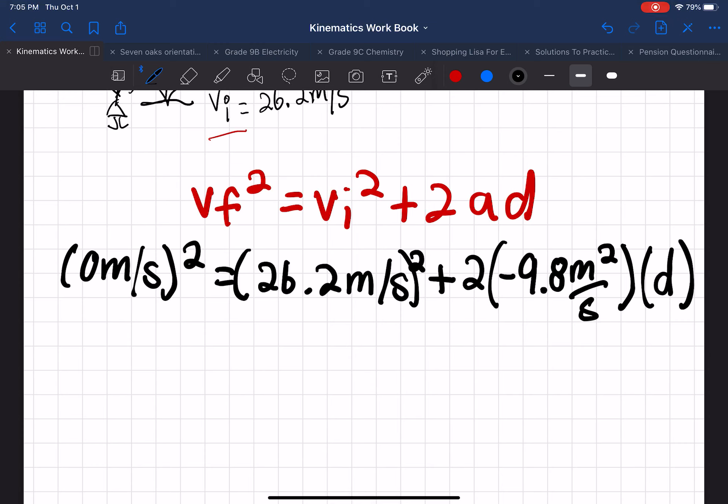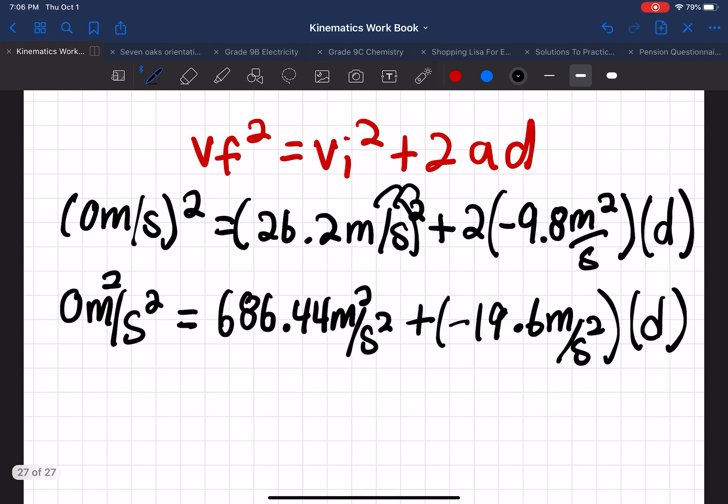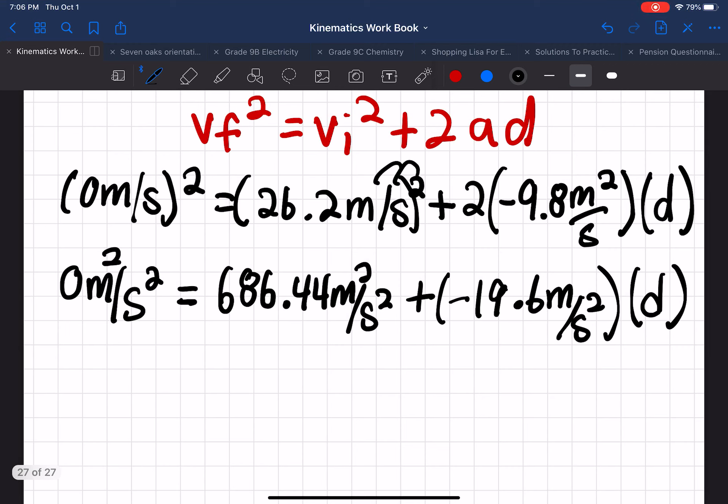So it's 0 meters per second squared equals 686.44 meters squared per second squared, because this went all the way through. And then we are also adding negative 19.6 meters per second squared, multiplied by d. This is negative 19.6, because we used the 2 and multiplied it through.